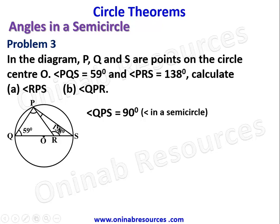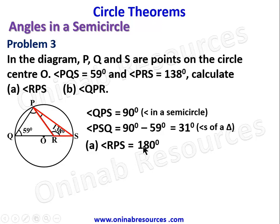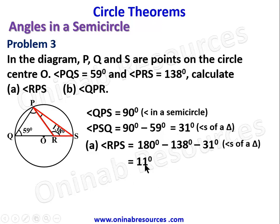Since angle QPS is 90 degrees, angle PSQ equals 90 minus 59 degrees — angles of a triangle — giving 31 degrees. From triangle RPS, angle RPS equals 180 degrees minus 138 degrees minus 31 degrees — sum of angles of a triangle — giving RPS equals 11 degrees.